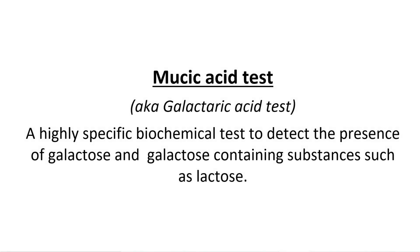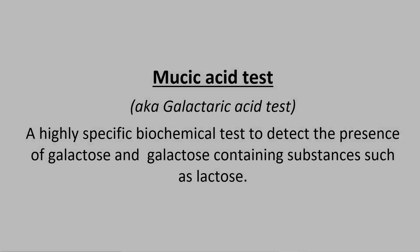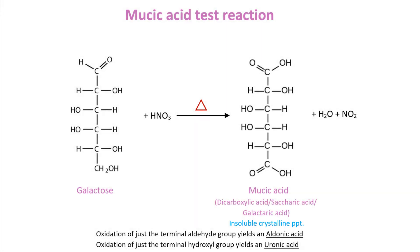The Mucic Acid Test is a highly specific biochemical test used to detect the presence of the aldose monosaccharide galactose, as well as galactose-containing substances in a sample. Galactose and galactose-containing compounds react with strong oxidizing agents such as concentrated nitric acid under conditions of high temperature to form an aldaric acid or dicarboxylic acid called mucic acid, with the formula C6H10O8. Mucic acid is also known as galactaric acid or saccharic acid, and the test is also sometimes known as the galactaric acid test.